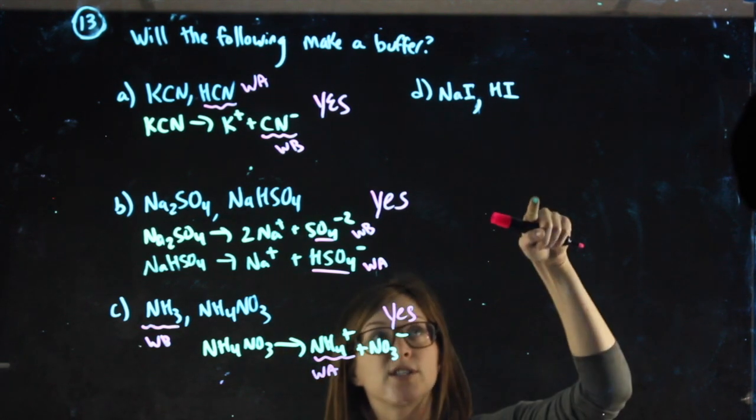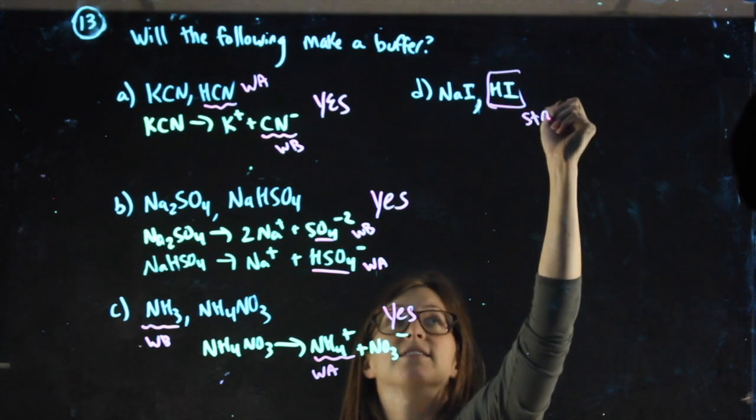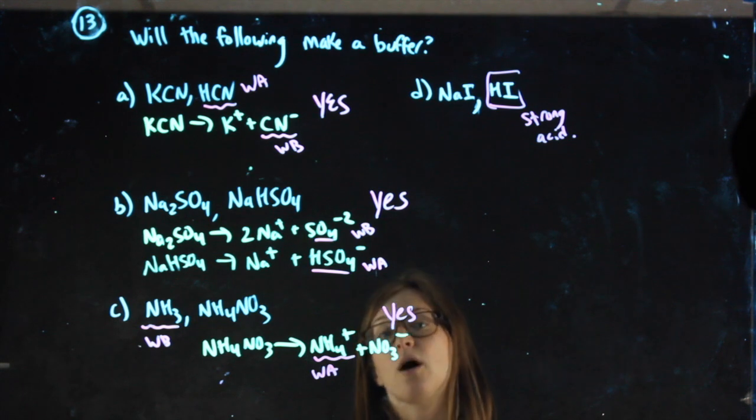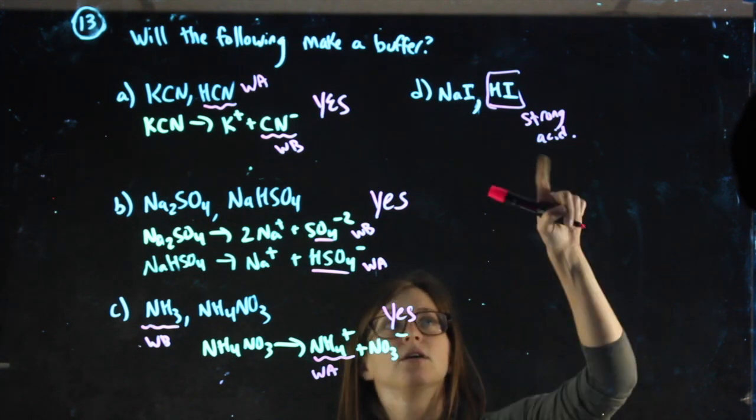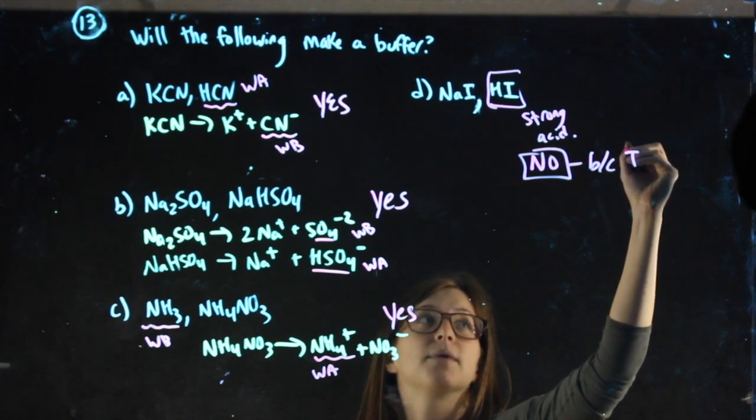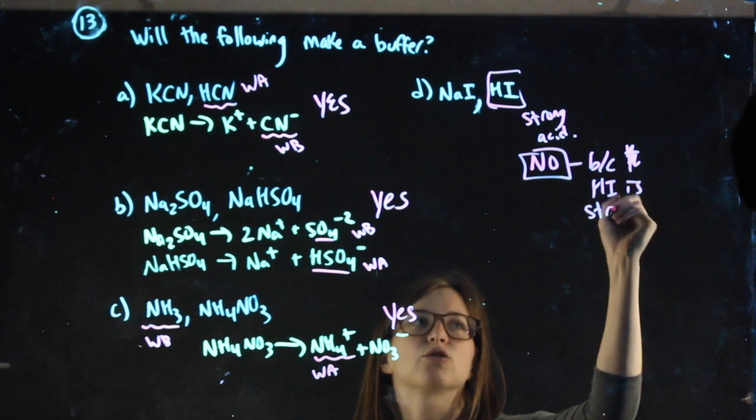NaI is a salt, so I can dissociate it, but I'm not going to bother because right away I see that this is a strong acid. In order to have a buffer, I need a weak acid and a weak base. Strong acid means this is not a buffer, because HI is strong.